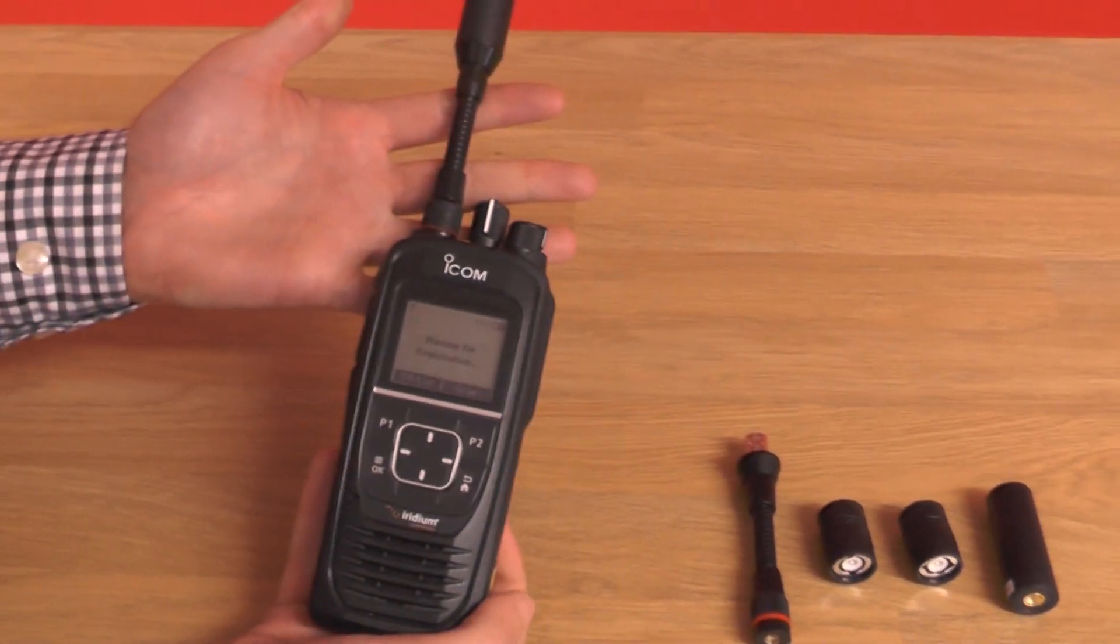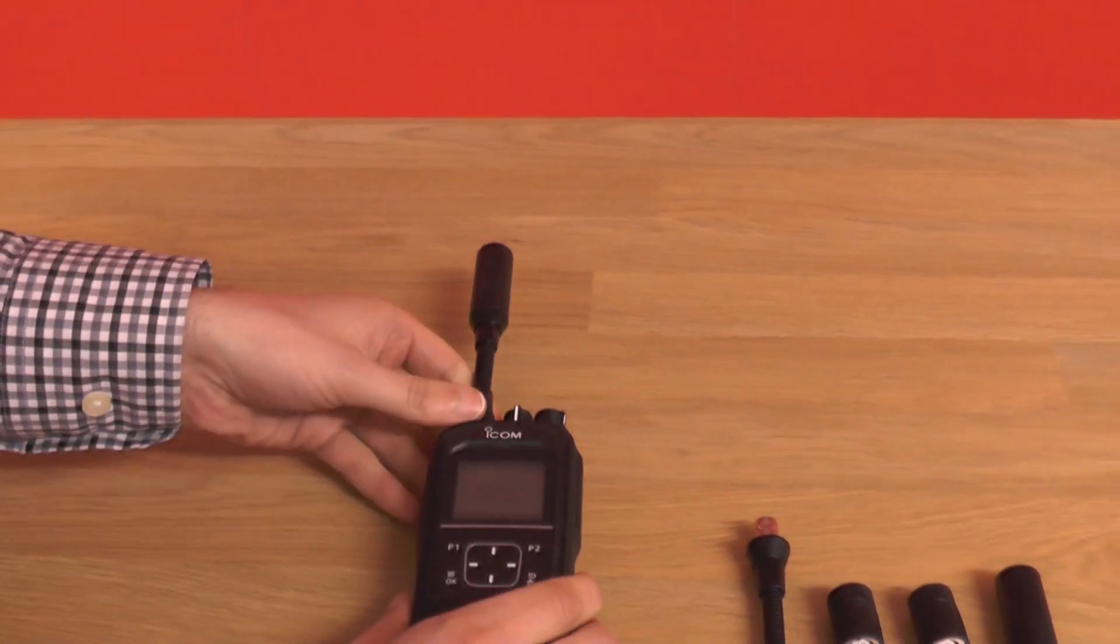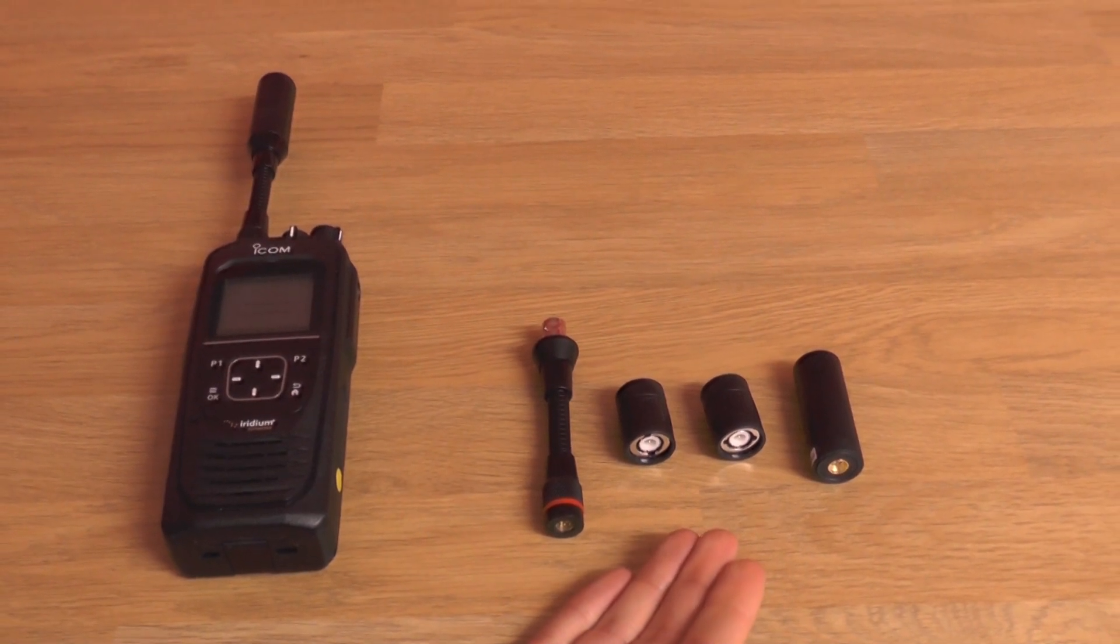So this is the standard antenna that comes with the SAT100 standard gooseneck, and then this is the new FAS103U quick release antenna kit.